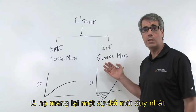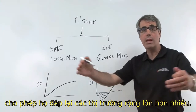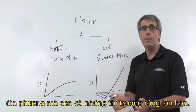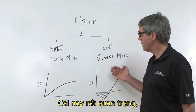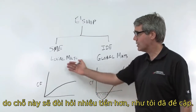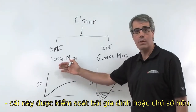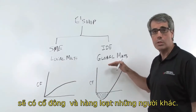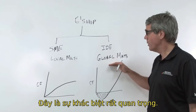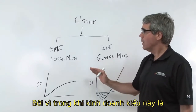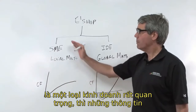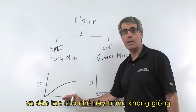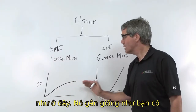Underlying what IBEs are doing is an innovation that's unique, allowing them to address much broader markets — not just the local market. This is very important because it's going to require more cash. While the SME is controlled by the family or the owner, the IBE is going to have shareholders and a bunch of other people. This is a very important difference, because the underlying system and training for this does not look the same.